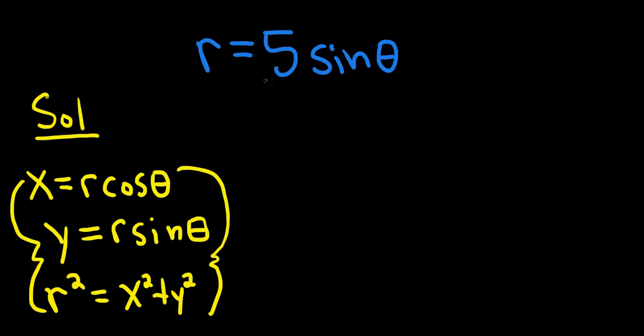In this problem we have r equals 5 sine theta. So we don't quite have any of these formulas. However, if you notice we have 5 sine theta, we're missing an r. So what we'll do is we'll multiply by r. And the reason we're going to do this is because we want it to become r sine theta so we can use this formula here.